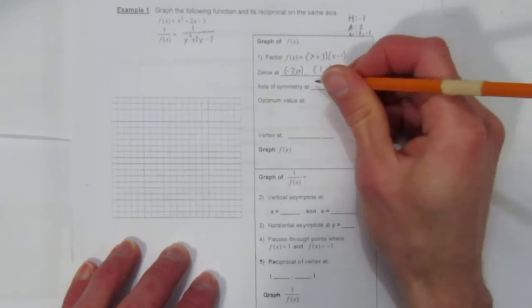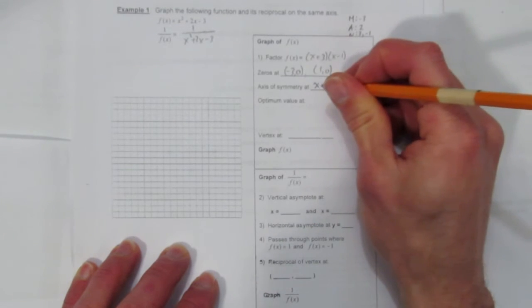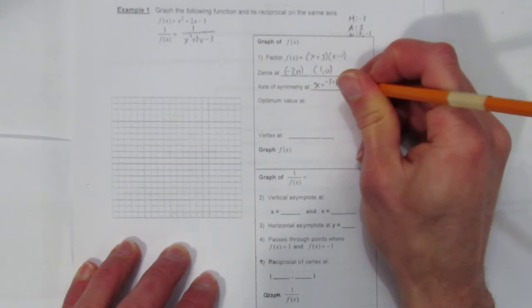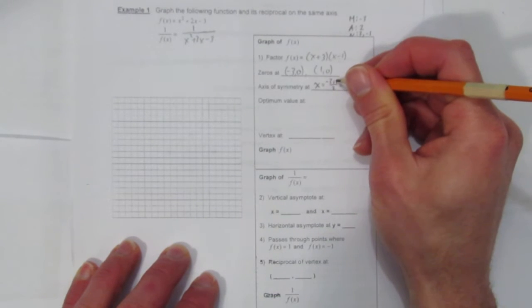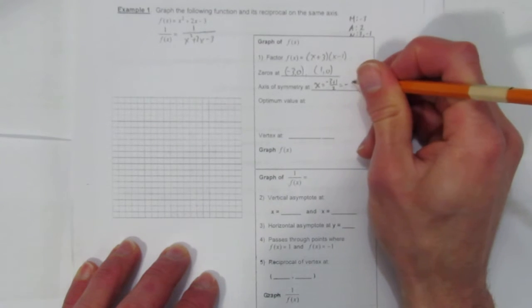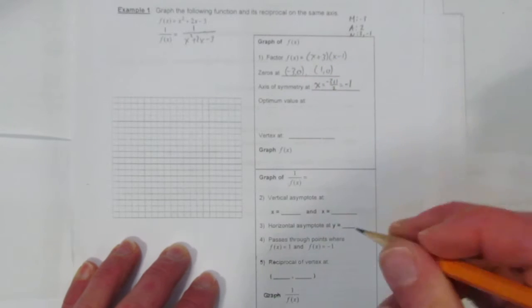We can find the axis of symmetry by taking the middle of those two zeros. That is, you add them together and divide by 2. So -3 + 1 is -2. Divided by 2, you get -1. Which should make sense. It's right in between the two zeros.